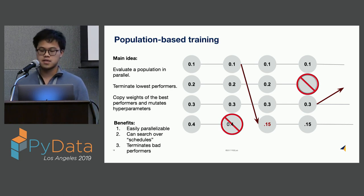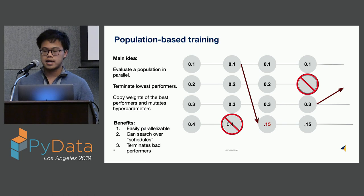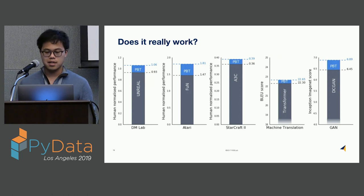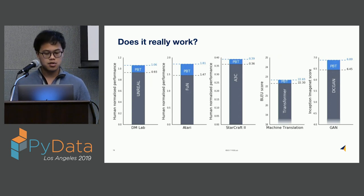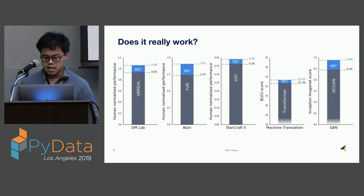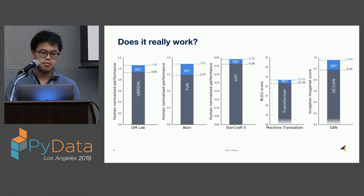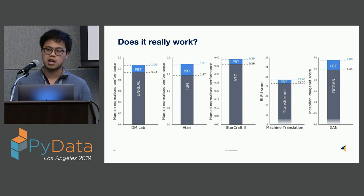The main benefits of population-based training are that it's easily parallelizable, enables you to search over schedules, and is efficient in that it early terminates bad performers. DeepMind ran this technique over multiple published algorithms including tasks in NLP, GANs, and deep reinforcement learning. They found that across the board, PBT was able to provide non-trivial performance benefits over the state-of-the-art published results. This is something you need in your toolbox if you're doing deep learning hyperparameter optimization.